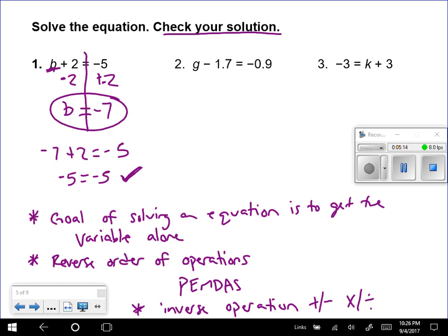Alright let's try number 2. So we have G minus 1.7 equals negative 0.9. So the inverse of subtraction is now addition. I'm going to add 1.7 to both sides.